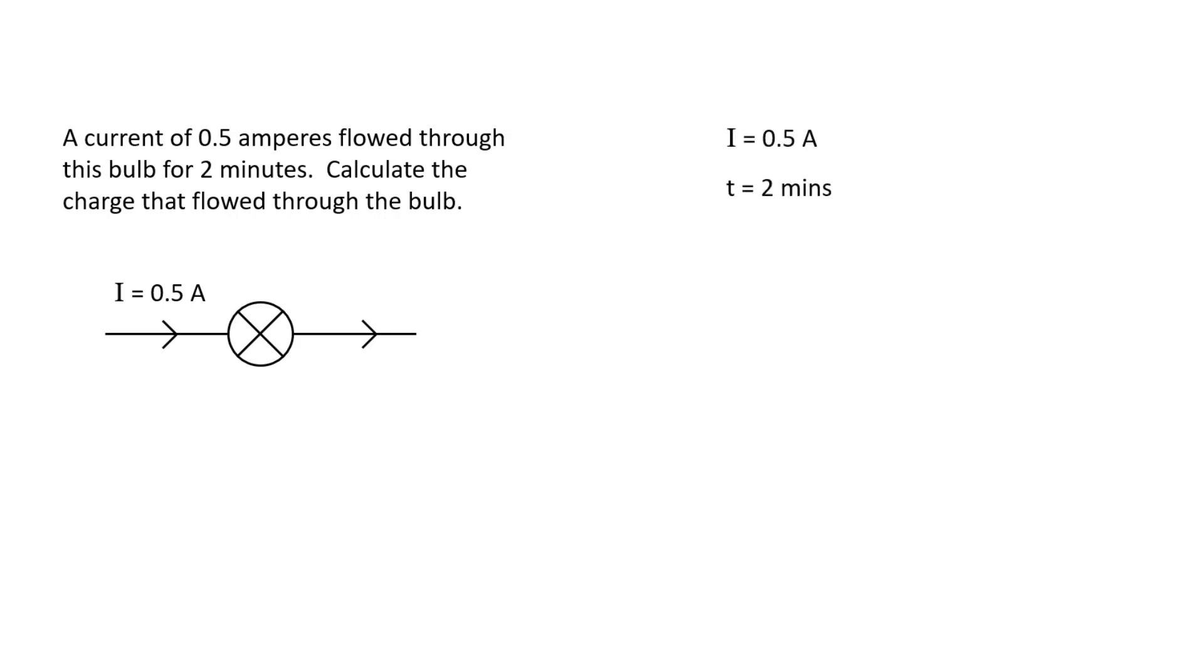First, let's capture some information from the question. I equals 0.5 amps. T equals two minutes. But amperes are coulombs per second, not coulombs per minute, so we need to convert two minutes into seconds by multiplying by 60, giving 120 seconds.